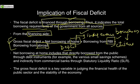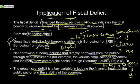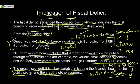Net borrowing at home includes directly borrowing from the public — citizens of India — through debt instruments such as various small saving schemes, treasury bills, cash management bills, and other money market instruments; and indirectly from commercial banks through SLR. SLR, as discussed in monetary policy, is for purchase of government securities — so when the government issues securities, it asks commercial banks to purchase them, indirectly raising money. The gross fiscal deficit is the key variable in judging the financial health of the public sector and the stability of the economy.